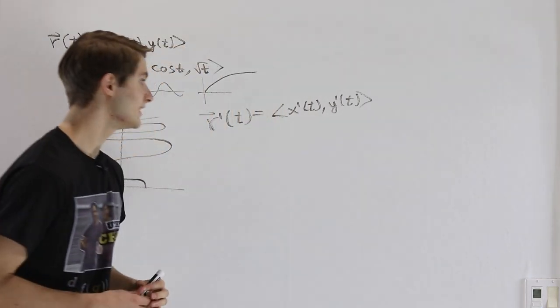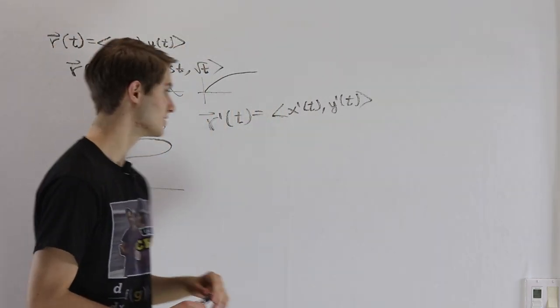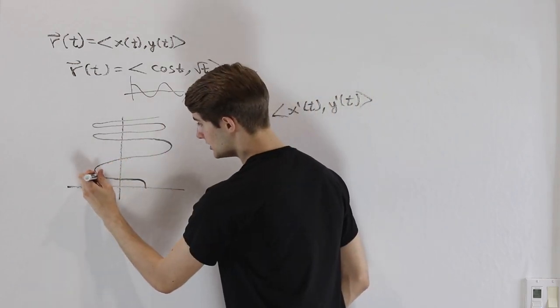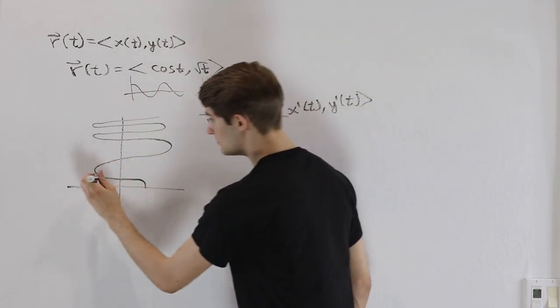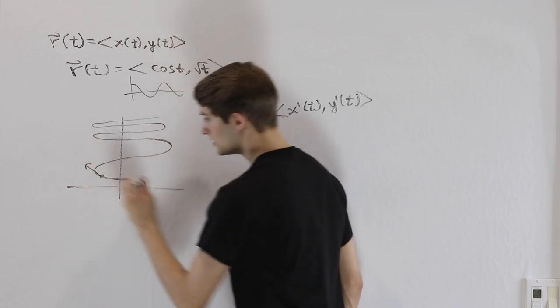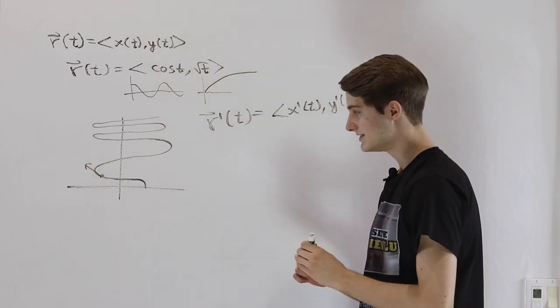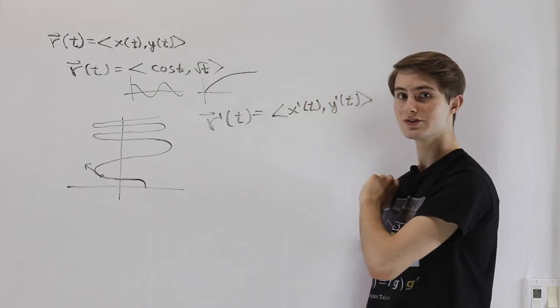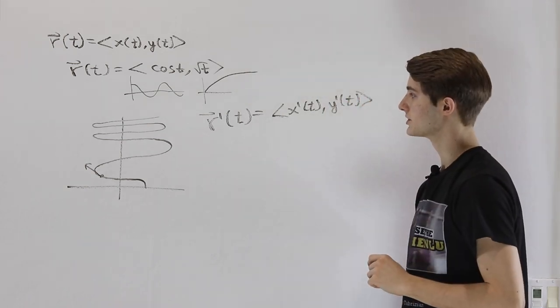And the fact that this is a vector indicates that the derivative has some direction. For example, if we look at this graph, the derivative of our function at this point is going to be a vector pointing in that direction, because as t increases, our vector is moving along that path. So that's the derivative of a vector function.